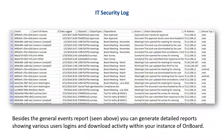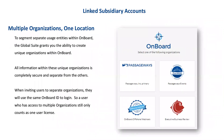Finally, the third major feature capability of the onboard platform is the ability to link subsidiary accounts. Effectively, this gives you the ability to create multiple unique onboard organizations for your group. For example, in the financial industry, with the global suite you can create a completely separate onboard instance for your holding company, a completely separate one for your board of directors, and even a third separate instance for your committees, internal staff meetings, et cetera — keeping those 100% separate from each other.